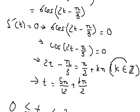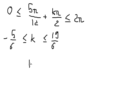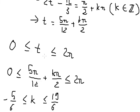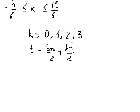Since k must be an integer, we find which integer values of k fall within this interval. So k equals 0, 1, 2, and 3. When k = 0, t = 5π/12. When k = 1, t = 11π/12.